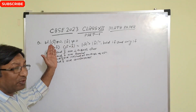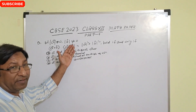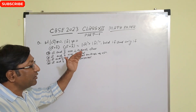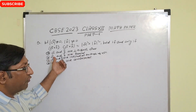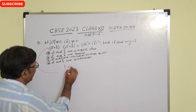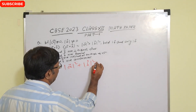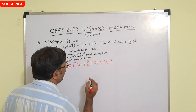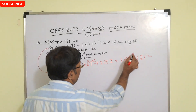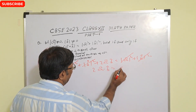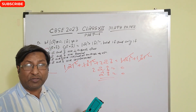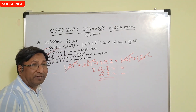Given magnitude of vector a is non-zero, magnitude of vector b is non-zero, and (a + b) dot (a + b) equals magnitude of a squared plus magnitude of b squared. Expanding the left side: |a|² + |b|² + 2(a dot b). Setting this equal to |a|² + |b|², the squared terms cancel and we get 2(a dot b) equals 0, so a dot b equals 0. This means the two vectors are perpendicular. Correct answer is option A.